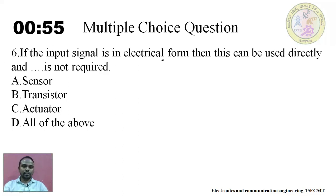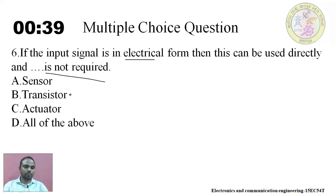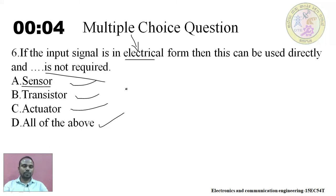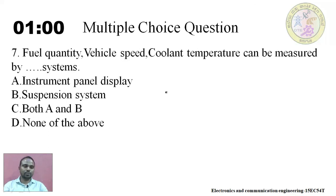Question six: if the input signal is in electrical form, then it can be used directly and dash is not required. Options: sensor, transistor, actuator, or all of the above. The answer is sensor — if the signal is already in electrical form, we do not need a sensor, because the sensor's purpose is to convert non-electrical signal to electrical.